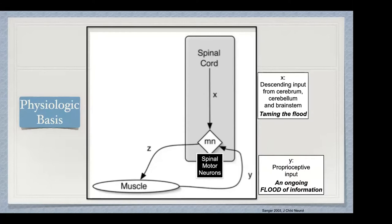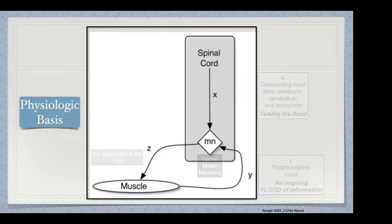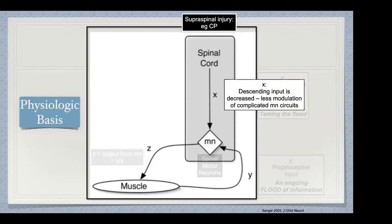The output of those motor neurons, Z, is roughly equivalent to what's coming in, Y, modulated or divided by X. So if you have supraspinal injury — for instance, cerebral palsy — you lose that descending input. It's decreased, so there's less modulation of the complicated motor neuron circuits and that proprioceptive flood is untamed.